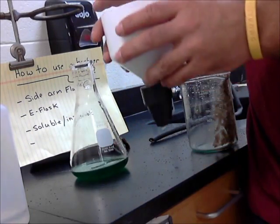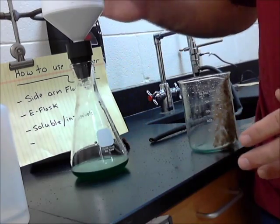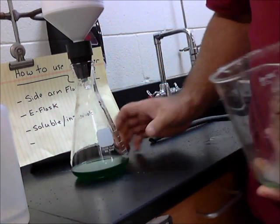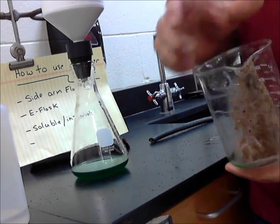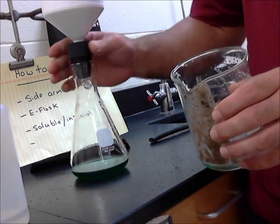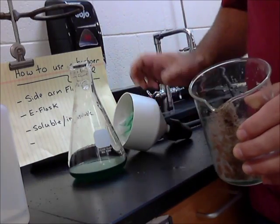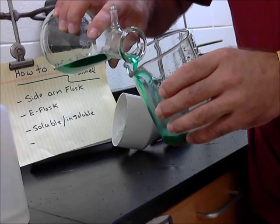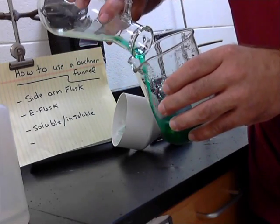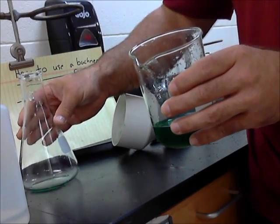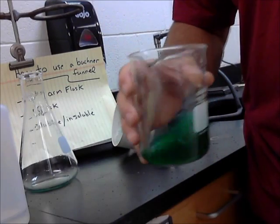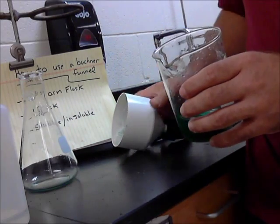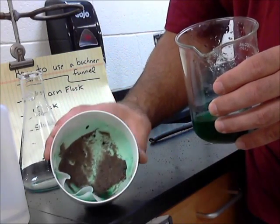Also, you'll notice that in my original beaker, I still have some of my solid material. I can use this liquid, pour it back in here, and rinse this out like so. Pour this back in. Because I am trying, if my goal of my experiment is to try and get all that solid into my filter, then I can use this stuff again and re-filter it through so I can trap more of it in the funnel.